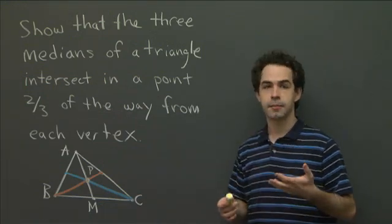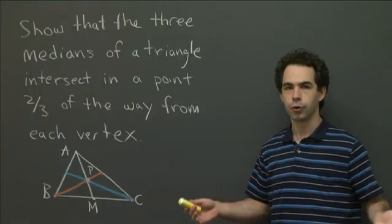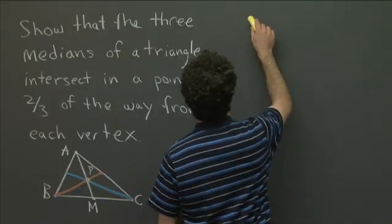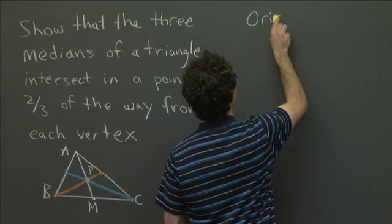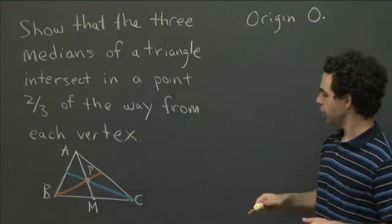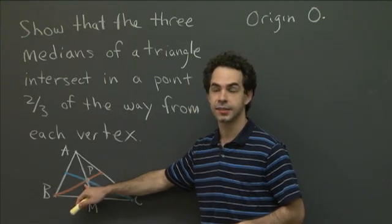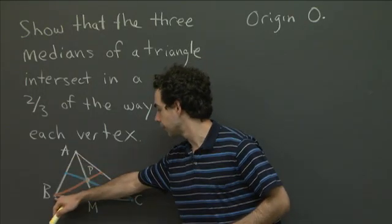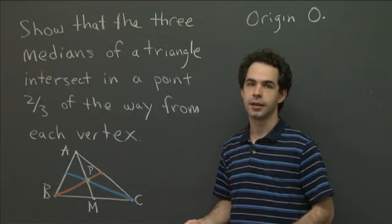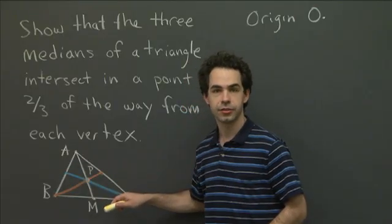One way we can do that is that we can compare the position vectors of those three points. If those three points all have the same position vector, then they're all in exactly the same position. In order to do that we need some origin, and it happens that for this problem it doesn't matter where the origin is, so I'm not going to draw an origin, but I'm going to call it O. We're going to set up a vector coordinate system with origin O. Now I want to look at what the vector from O to P is in terms of the vectors connecting O to A, B, and C. Those are the vectors that determine the vertices of the triangle, so I want to relate the location of P to the locations of A, B, and C.